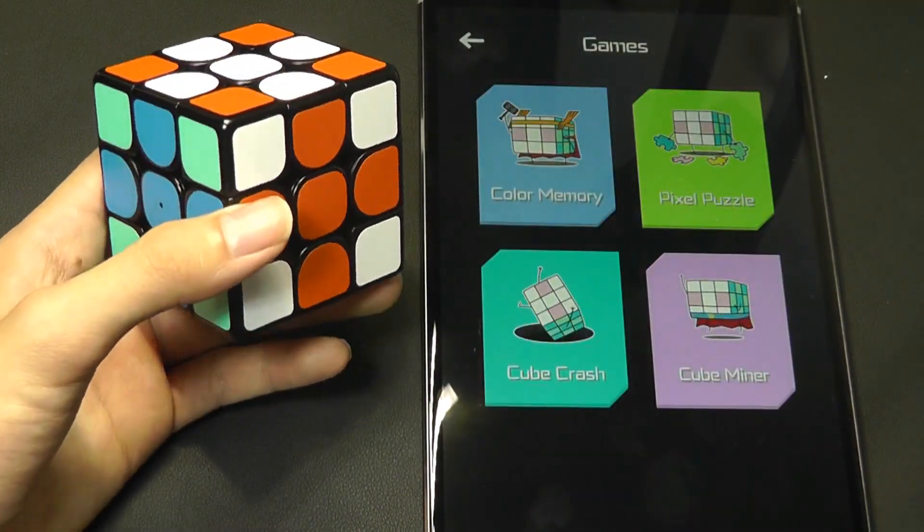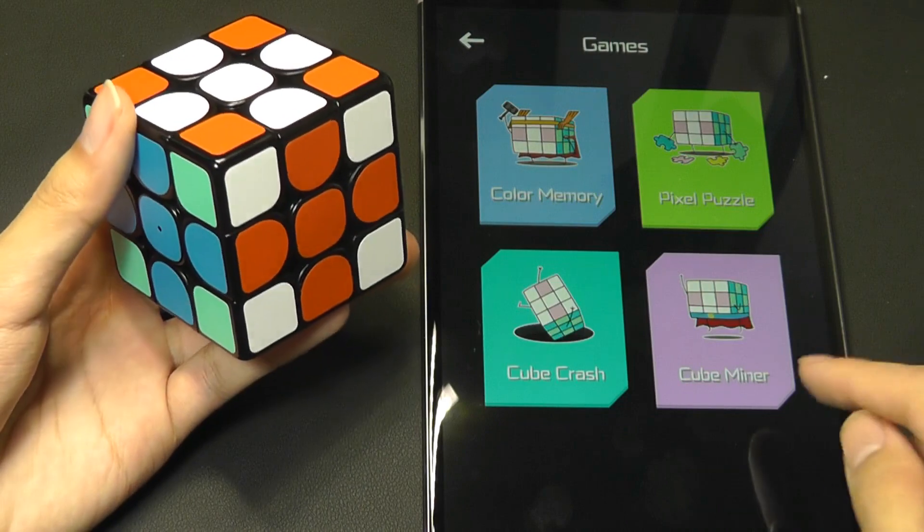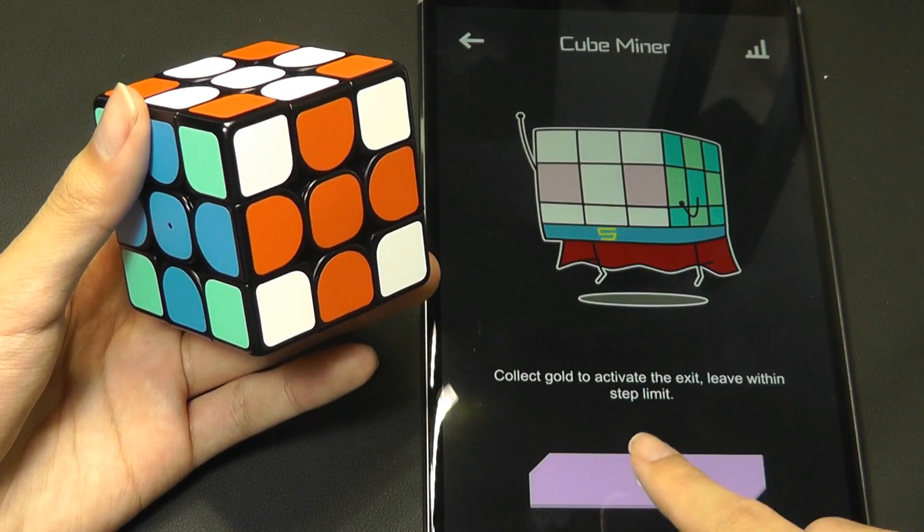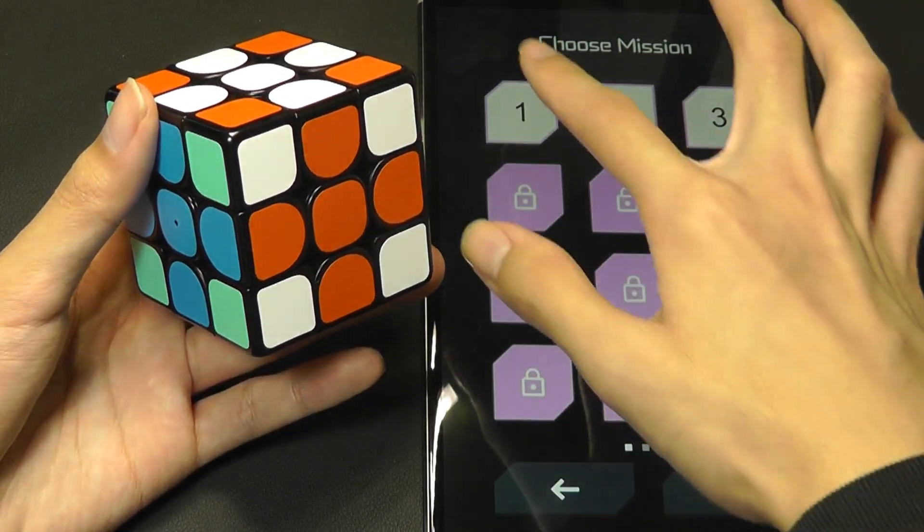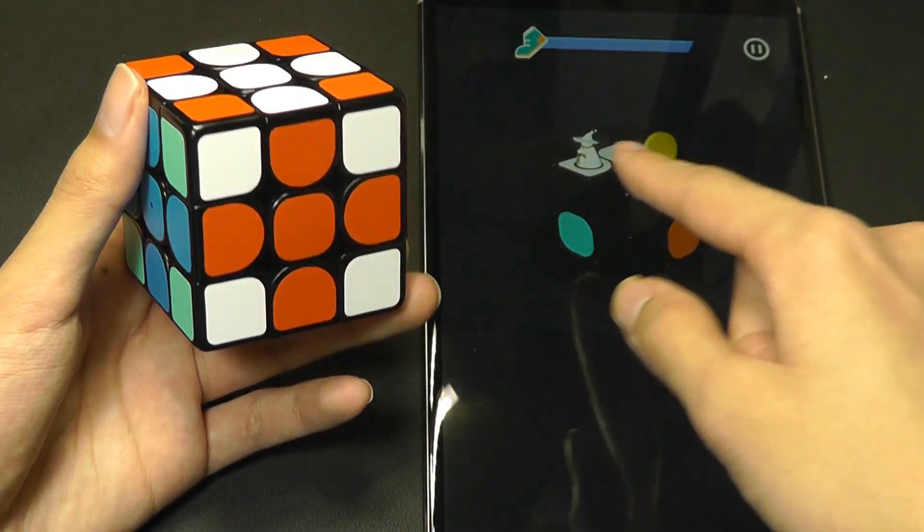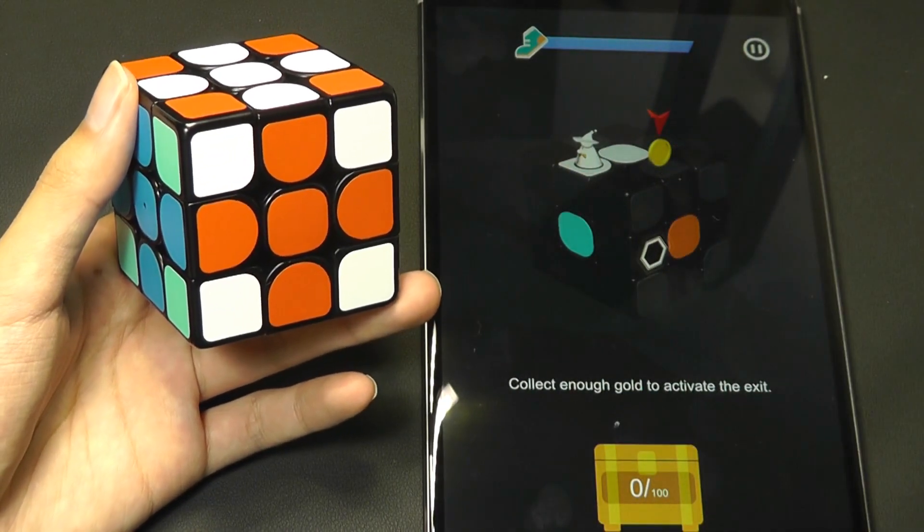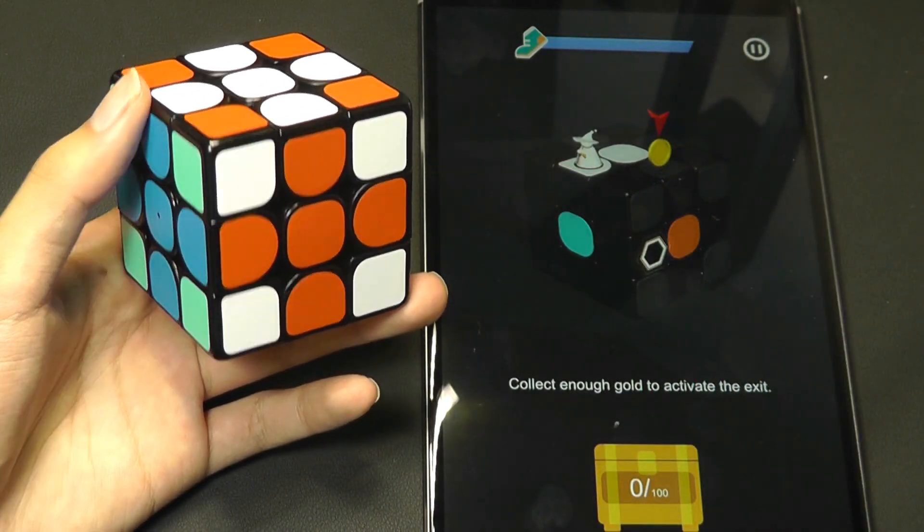Under the game mode, we have some additional functions. For instance, there's something called a cube mixer. And what this does is you have to collect tokens or coins essentially by having the king collect the token and then end up in this portal to have him go into the next level.